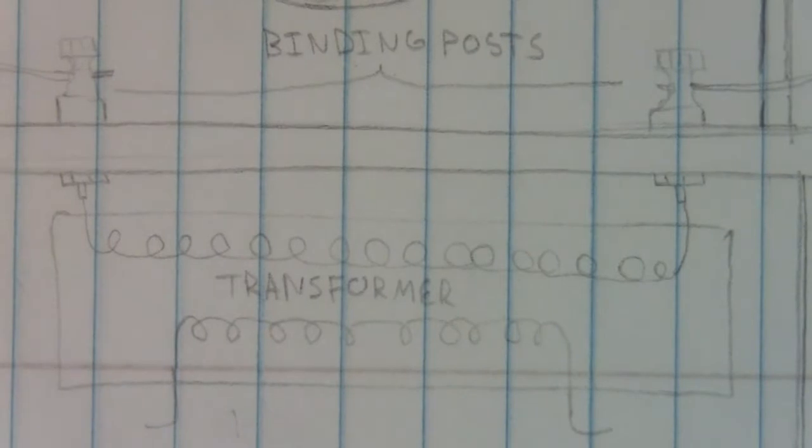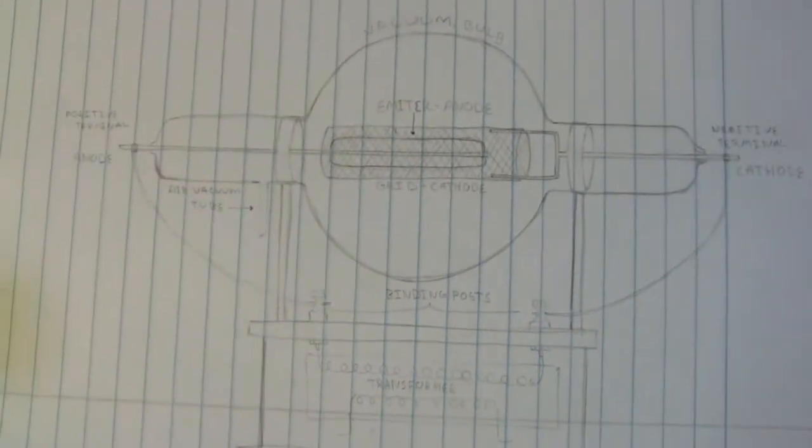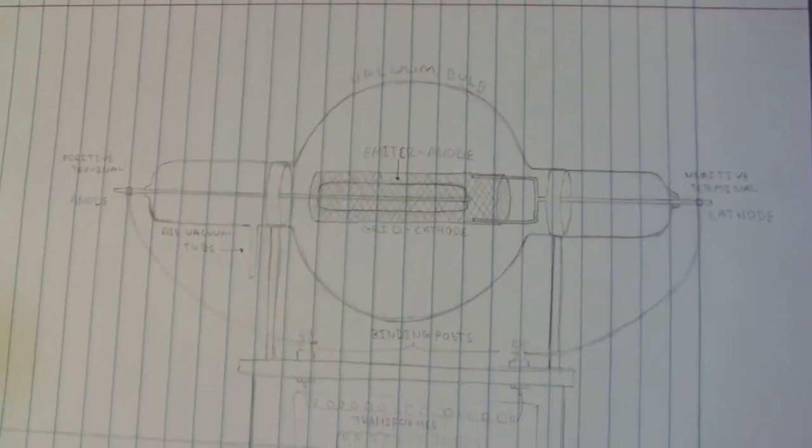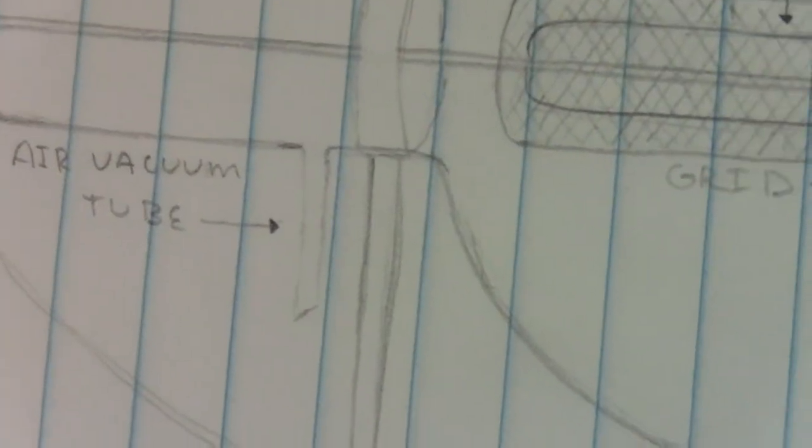And then here's the bottom with the transformer and binding posts. And then there's a little air removal tube.